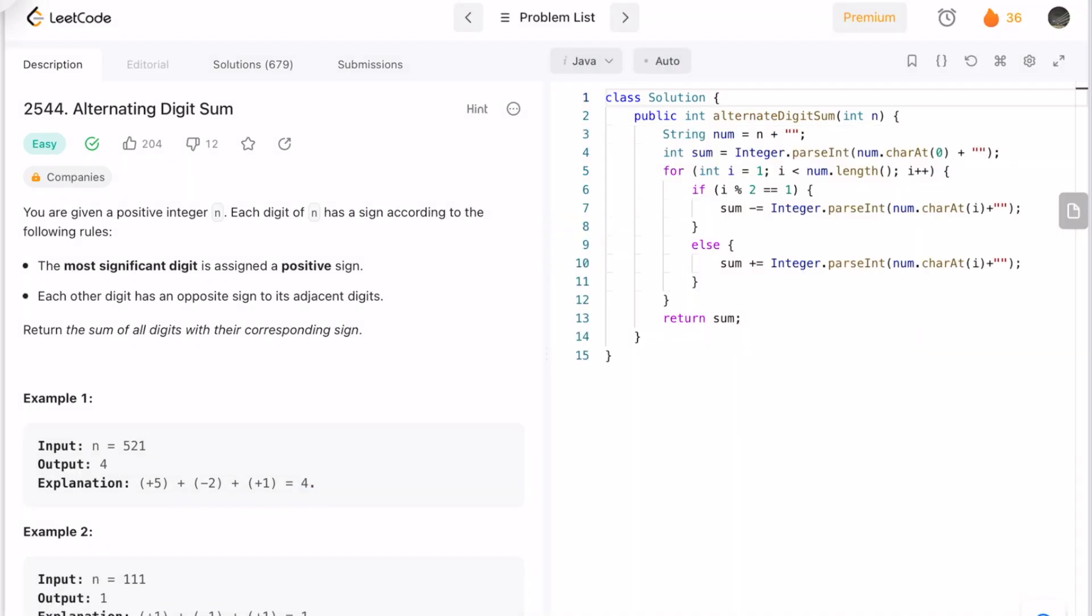Let's take the first example where n is given as 521. Let's treat this as a string so that we can iterate through the input from left to right and access each character at a time. We need to find the overall sum, so let's declare a variable called sum.